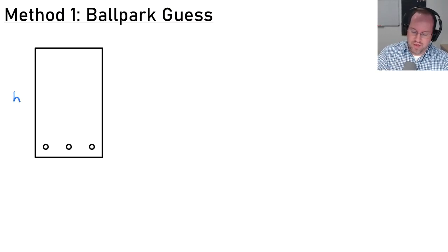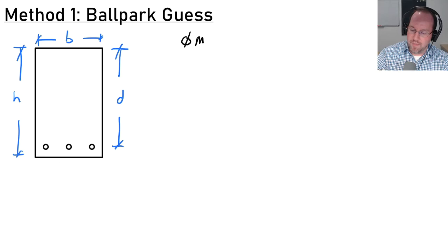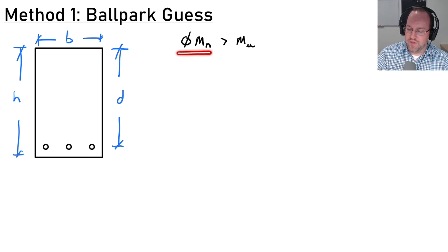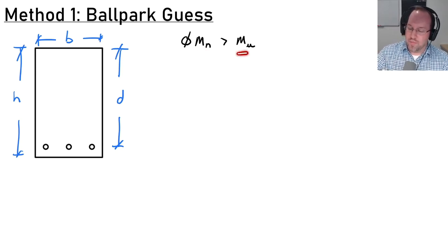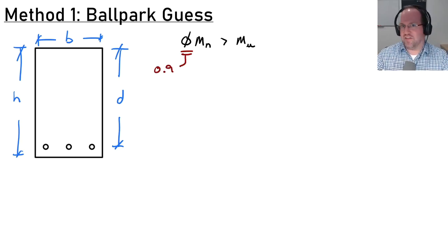Let's say my cross section has a height h and a width of b, and the depth to my steel is distance d. My objective is to ensure that my capacity is greater than my demand. Capacity is given by φMn — φ is our strength reduction factor, Mn the nominal moment capacity, and our demand is Mu. We're always going to assume φ is 0.9, which is the strength reduction factor for a tension-controlled section.